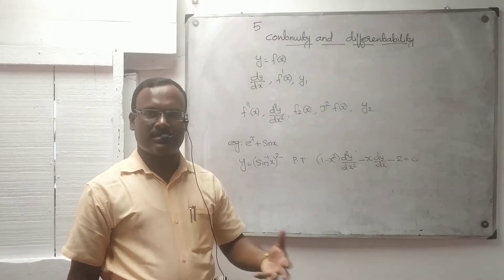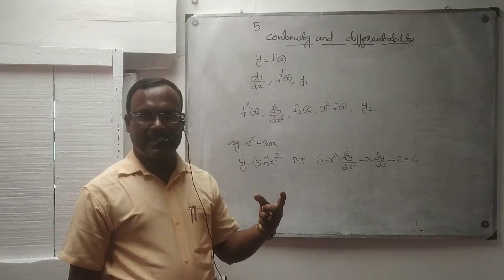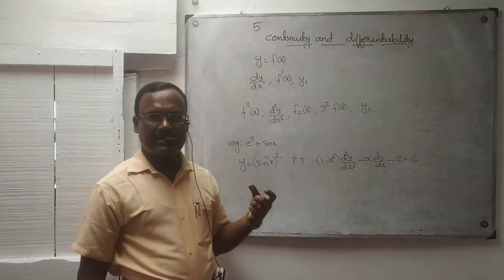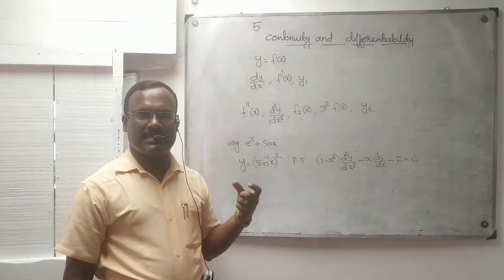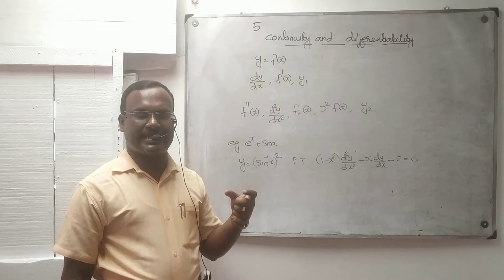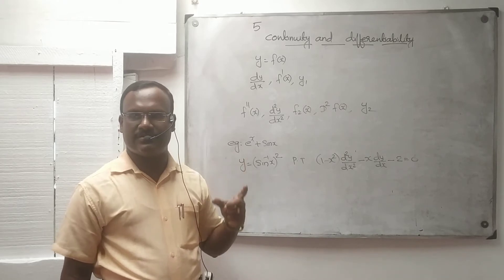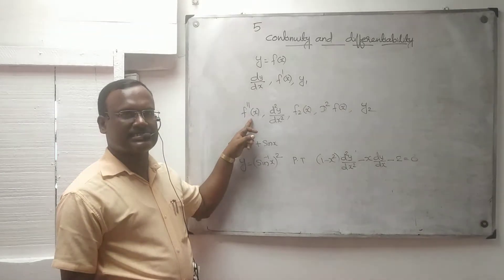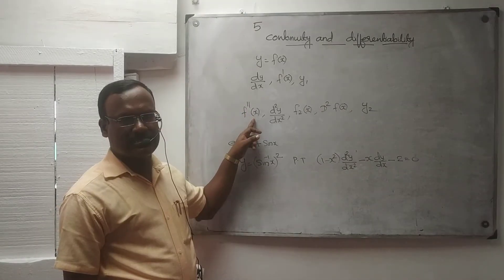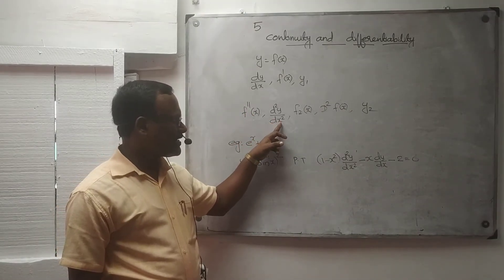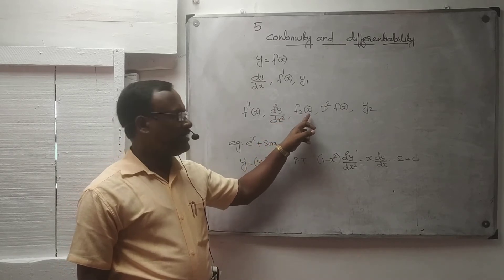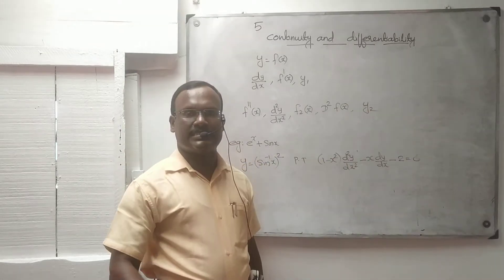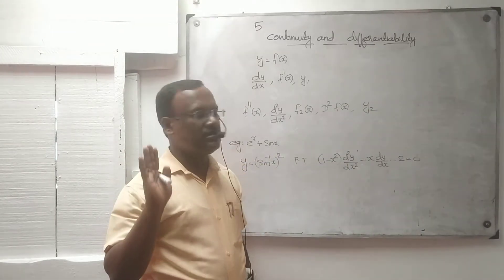The second order derivative — so, f double prime of x, d squared f of x. This is the second order derivative of y.